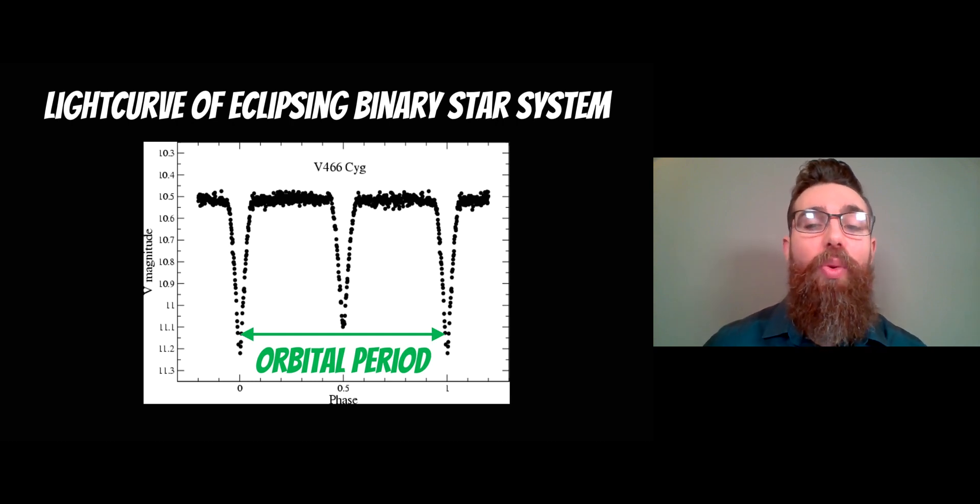The distance or the time between those transits of a single star would be your orbital period. If both stars are of a similar size, then the transits are going to be a similar depth. If one star is big and one star is small, then you get a smaller transit and then a larger one, and they alternate. It's fairly easy to get the orbital period from these particular systems.